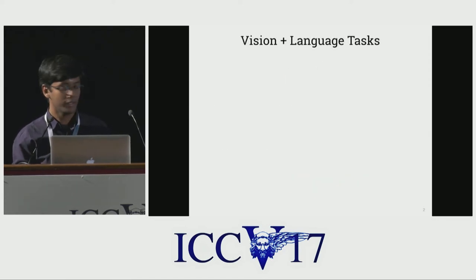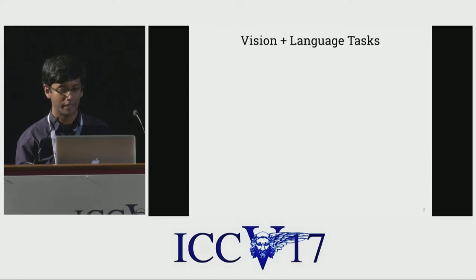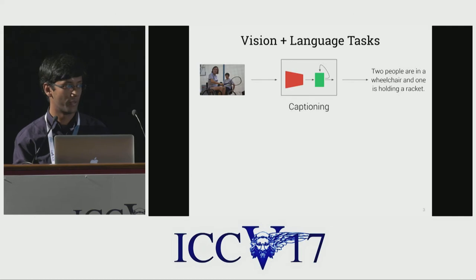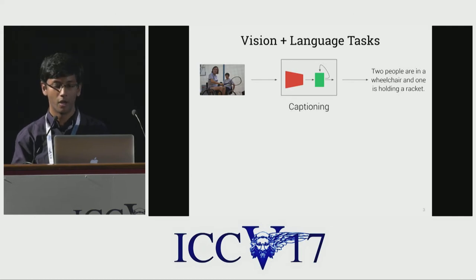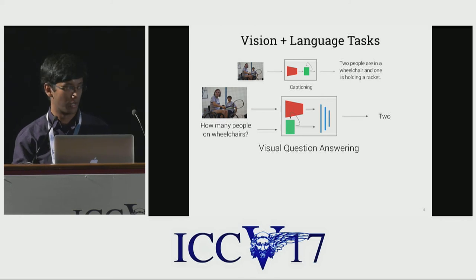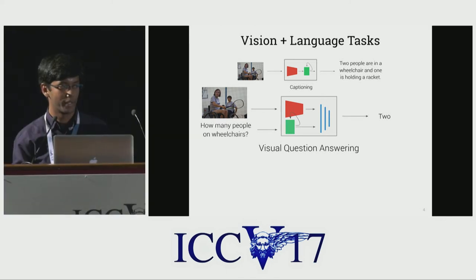Tasks at the intersection of vision and language have gained a lot of recent prominence. This includes image captioning, where the goal is to predict a one-sentence description of the image, or visual question answering, where given an image and a question, the goal is to predict a natural language answer.